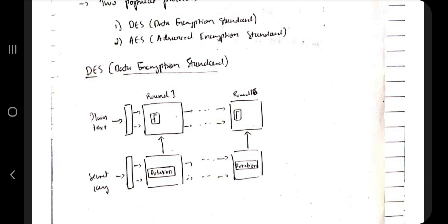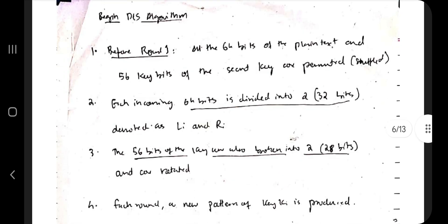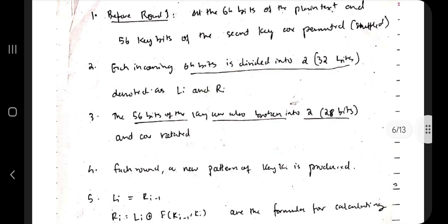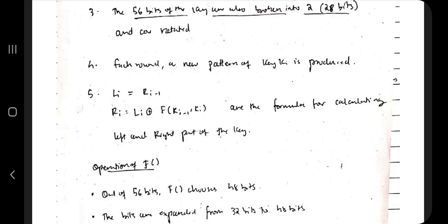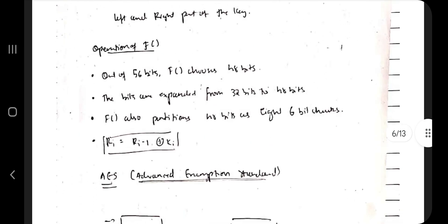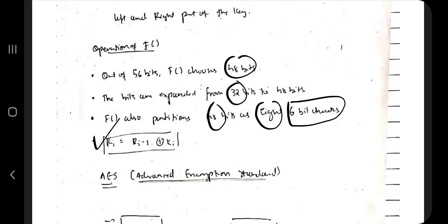Each of the 64 bits is divided into left and right parts of 32 bits each, then converted to 28 bits and rotated. A function F converts 48 bits into 32 bits, and each of the 48 bits is divided into eight parts of six bits each. Using this formula, the DES algorithm is performed.